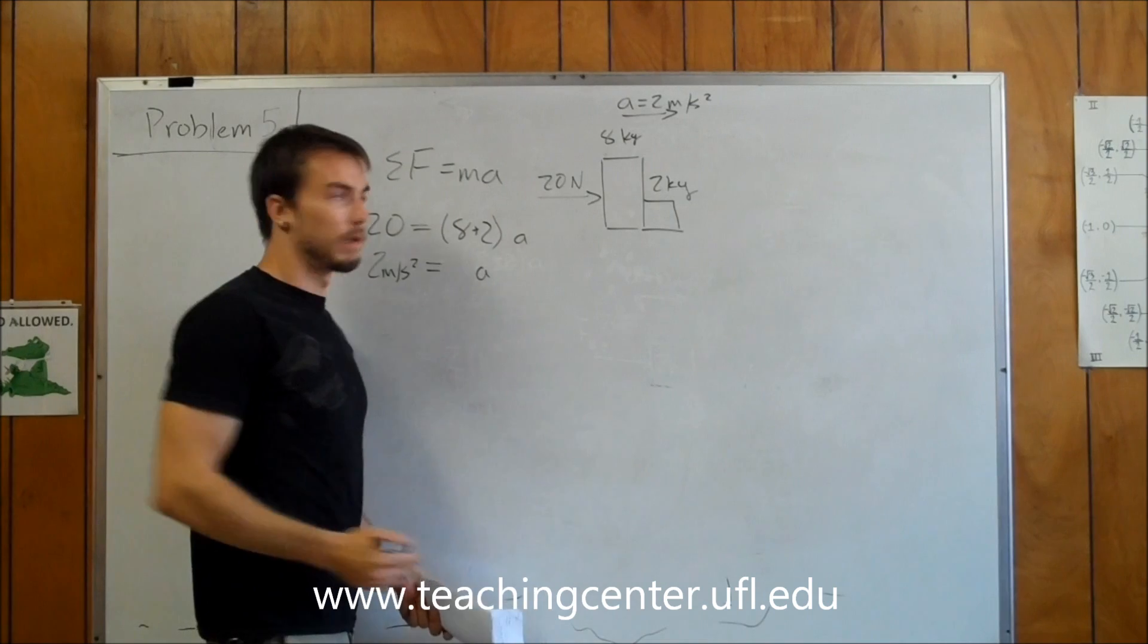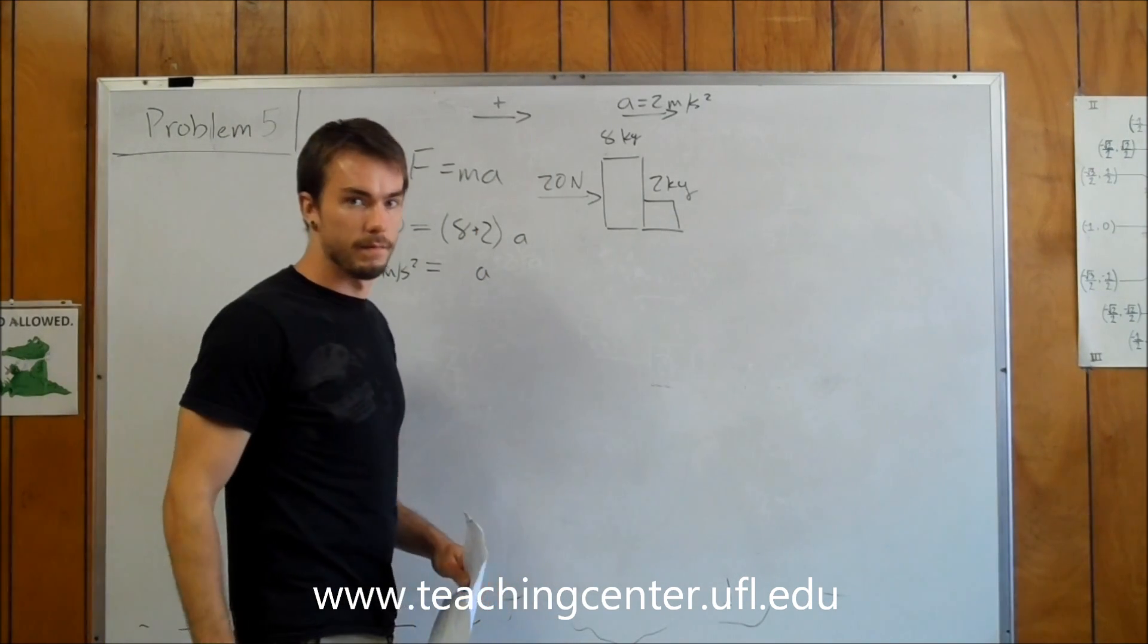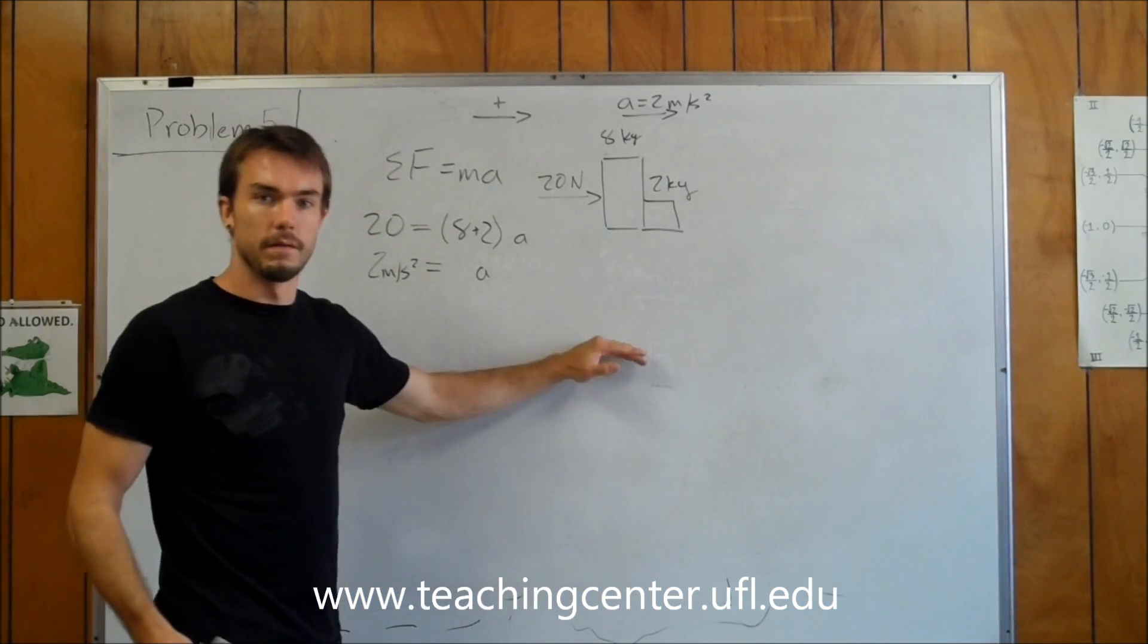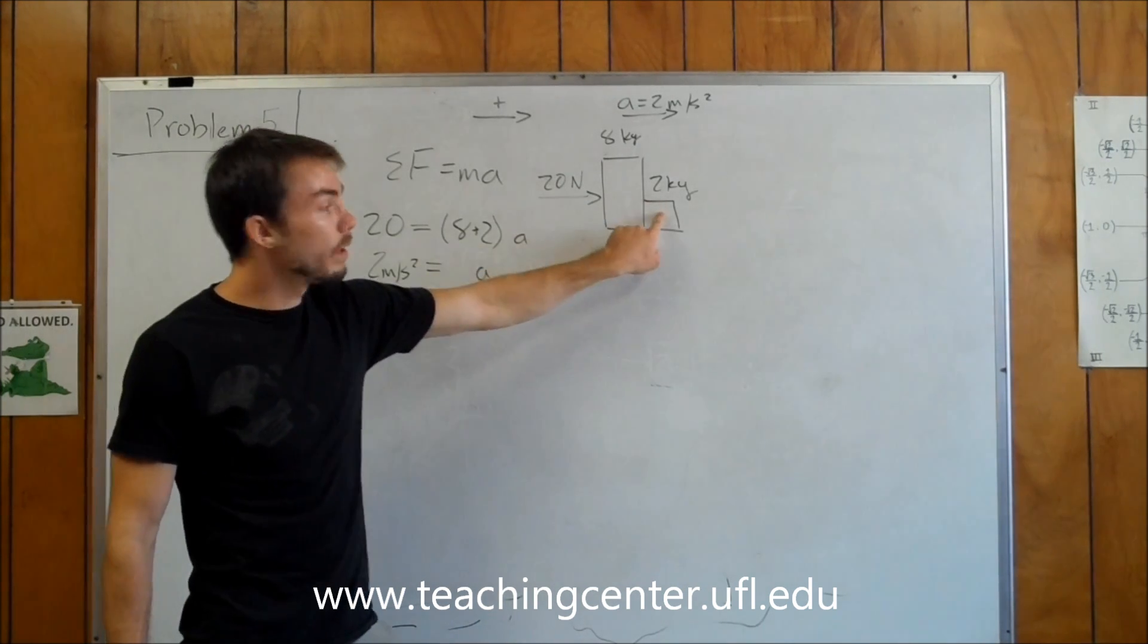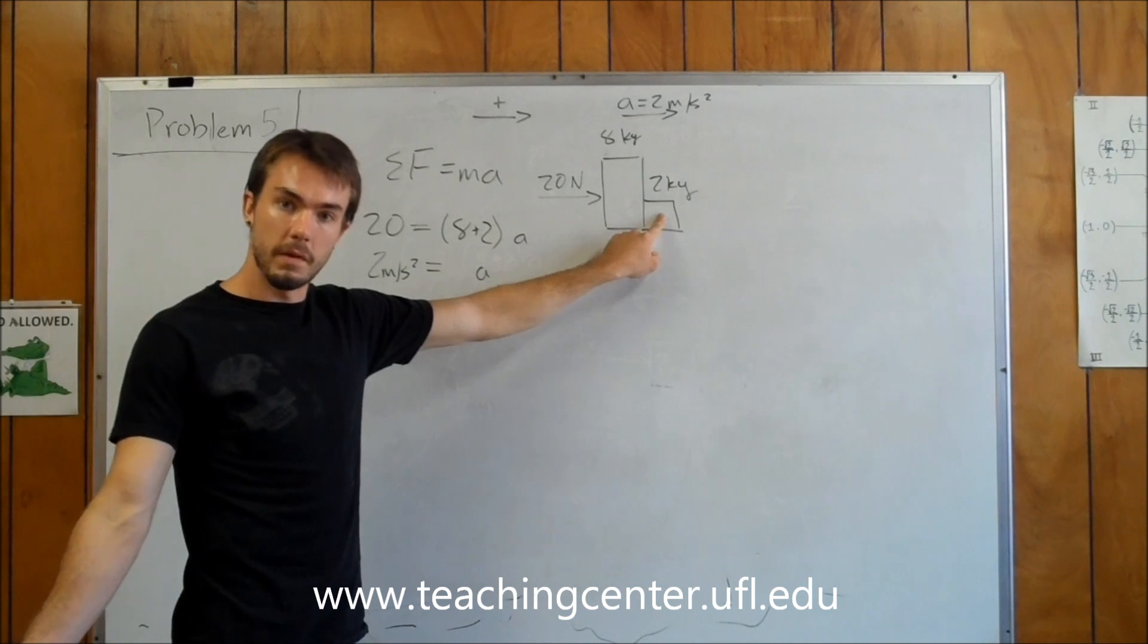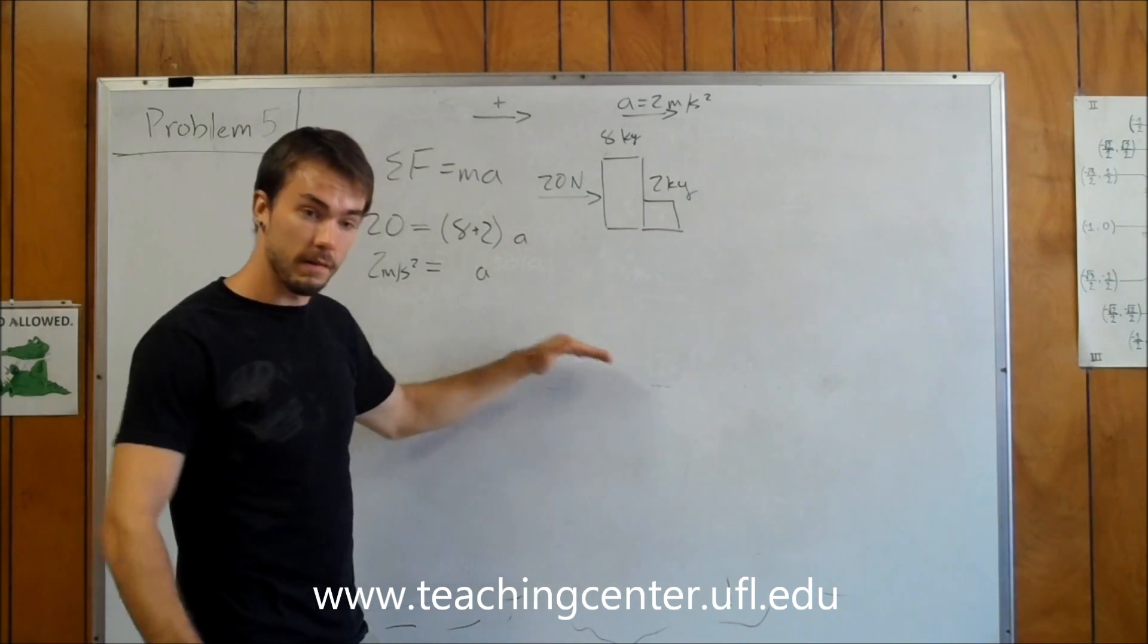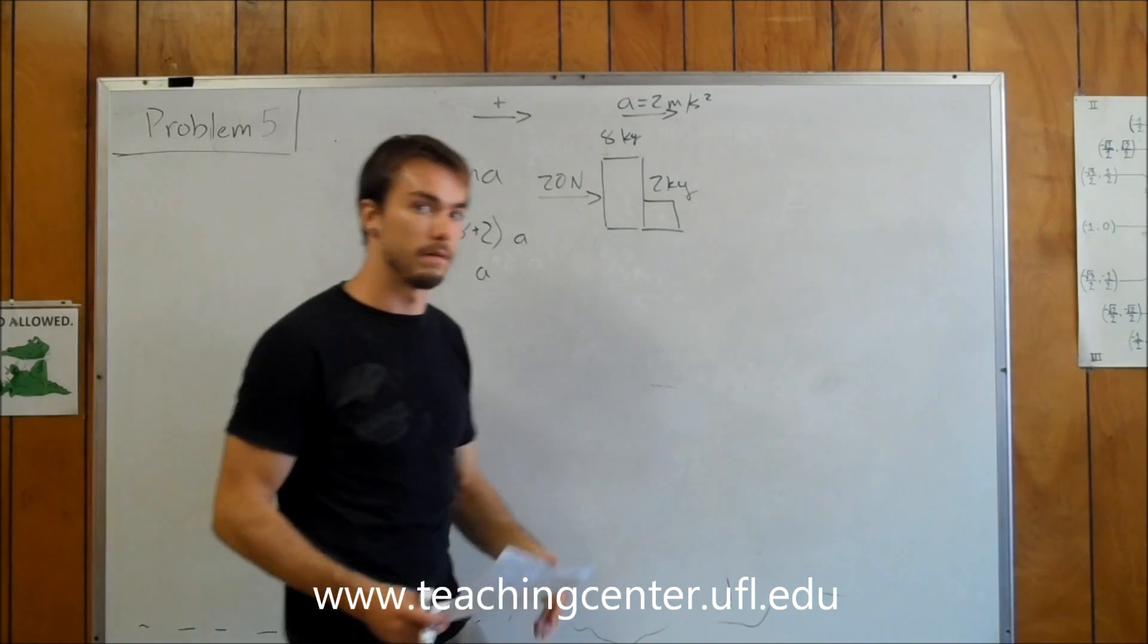Now this is, of course, assuming that everything pointing to the right is going to be a positive vector, and everything pointing to the left is going to be a negative vector. Now at this point, you have two choices, and I'll go through both of them real quick for you. You can either look at the 8-kilogram block, or you can look at the 2-kilogram block. And if you are one of those people that do decide to look at the system of equations, then I'll be setting up both equations that you'd be using to solve simultaneously for the internal force.